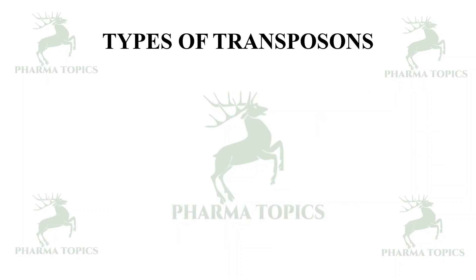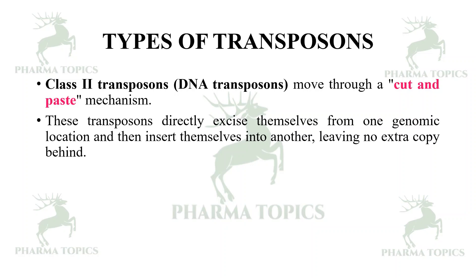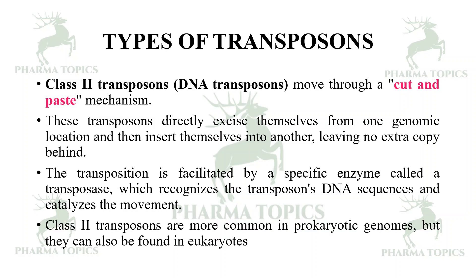Class 2 transposons, or DNA transposons, move through a cut-and-paste mechanism. They directly excise themselves from one genomic location and insert into another, leaving no extra copy behind. The transposition is facilitated by a specific enzyme called transposase, which recognizes the transposon's DNA sequences and catalyzes the movement. Class 2 transposons are more common in prokaryotic genomes but are also found in eukaryotes. These transposons are useful in generating transgenic or genetically modified organisms.